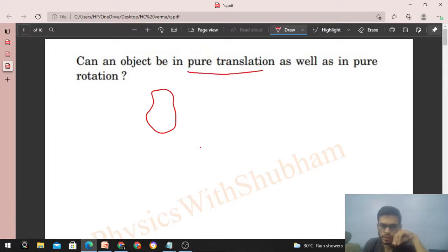If I say it is in pure translation, then if I take any two points on this object, the two points will move in a parallel line. The motion of two points on an object is in parallel lines if the object is performing pure translation.